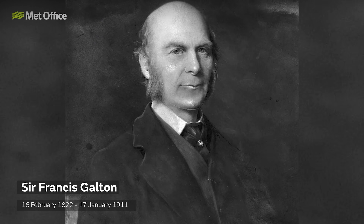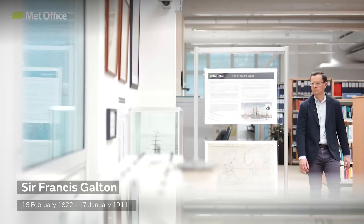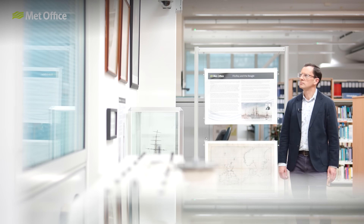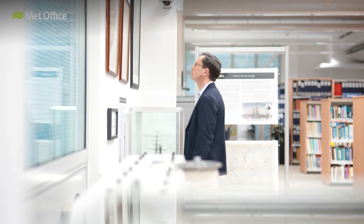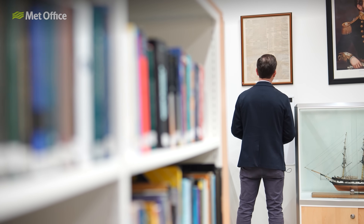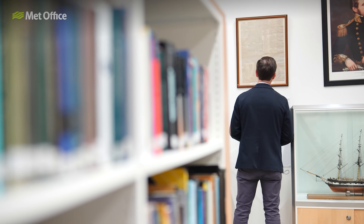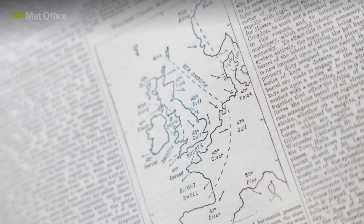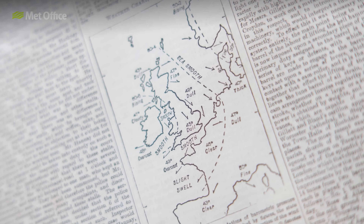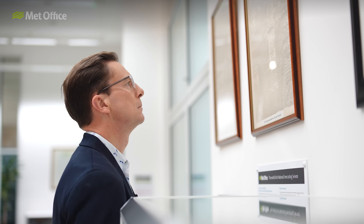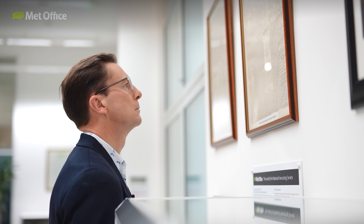Sir Francis Galton is credited with producing the first modern weather chart in 1875. He also pioneered the use of weather charts in newspapers, with the Times first publishing them using data from the Met Office.